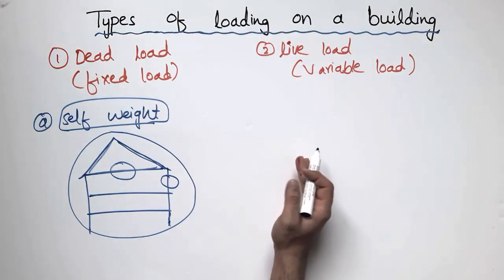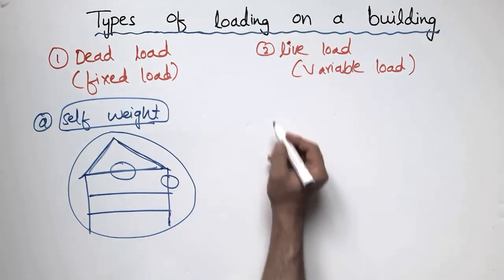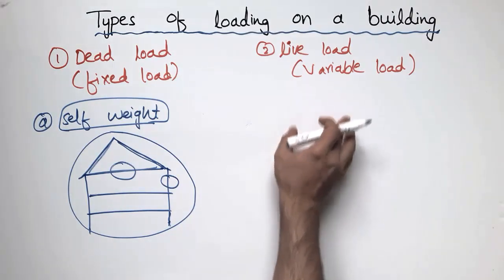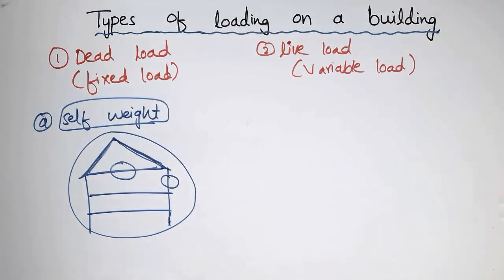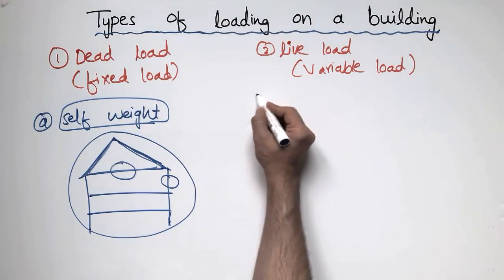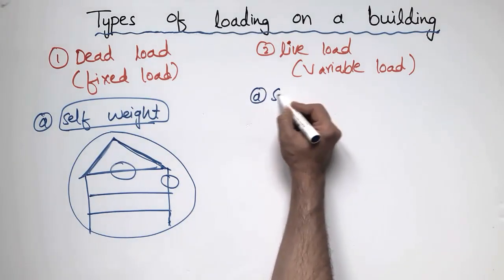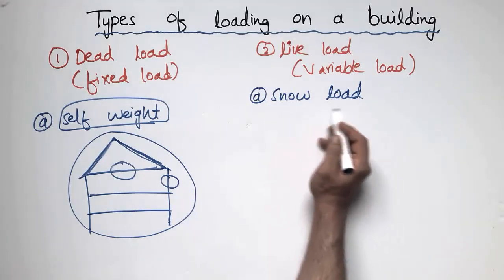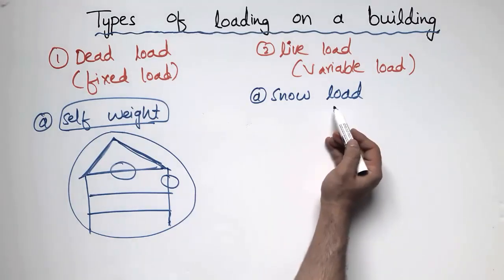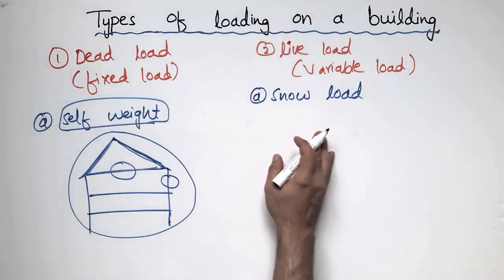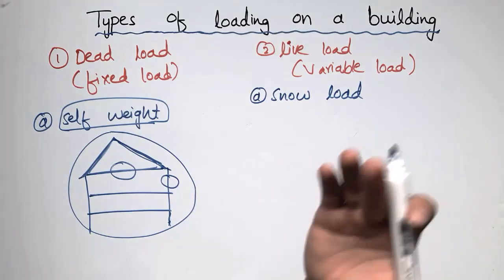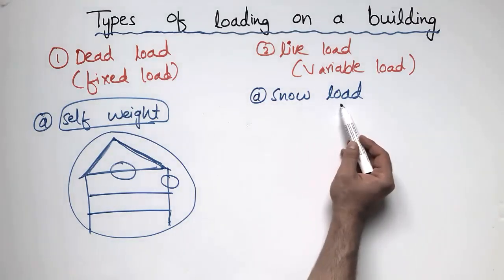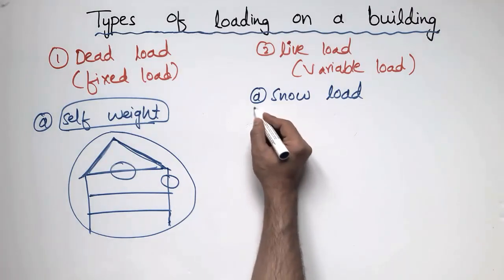The live load is always changing with the location or with time. There are different sub-classifications of the live load. The first sub-category of the live load is the snow or ice load. The snow load or ice load is the load coming from snow on a building. In the case of a snowy region, you should always design your building for snow loading.